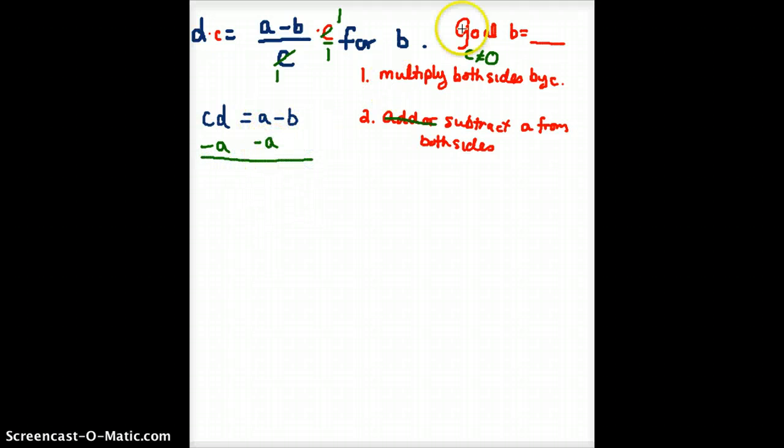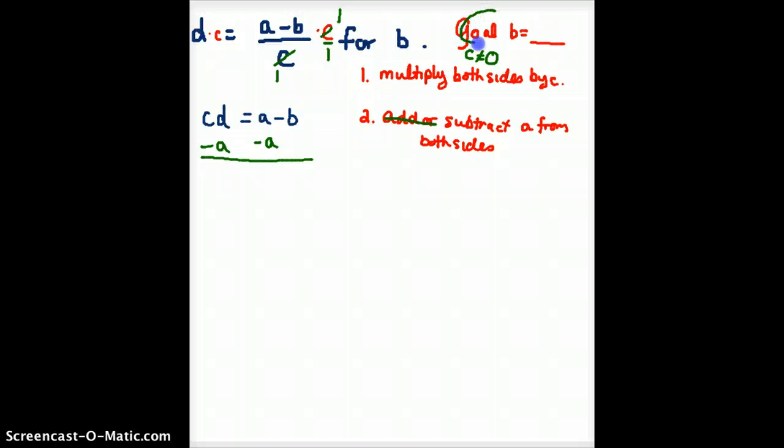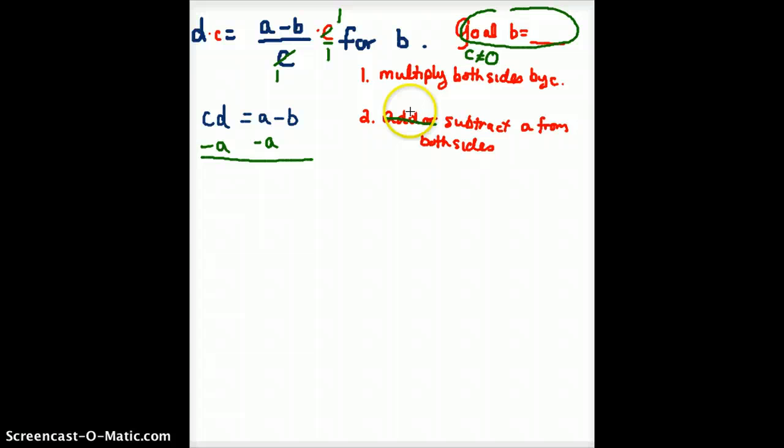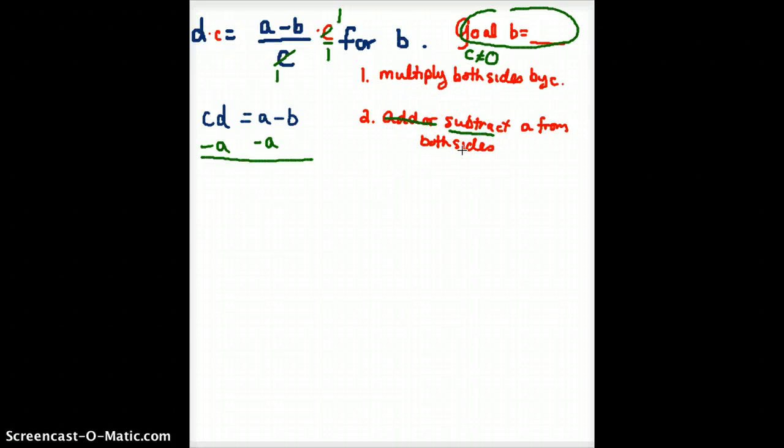So I am closer to my goal of getting B equals to something. I'll have B on one side and everything else on the other. So, can you see that we have to subtract A from both sides in order to get rid of it?